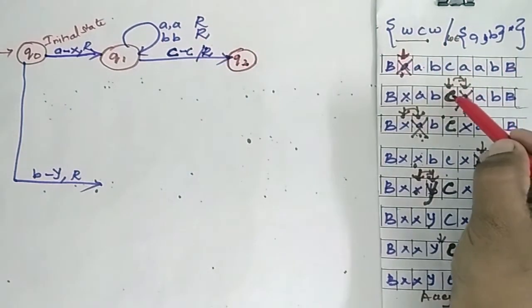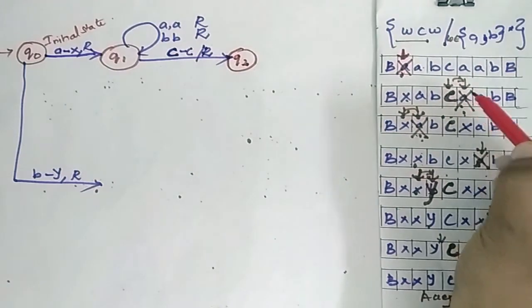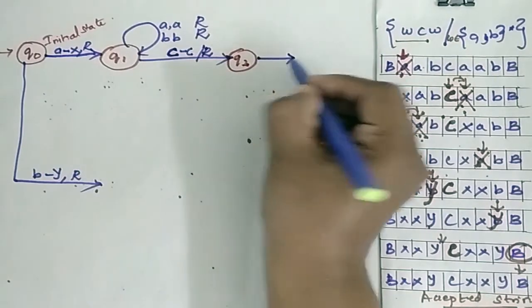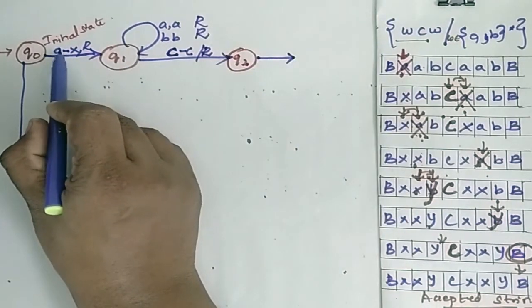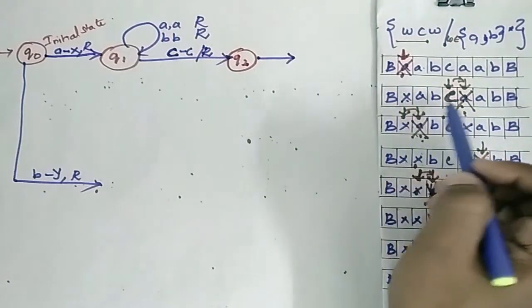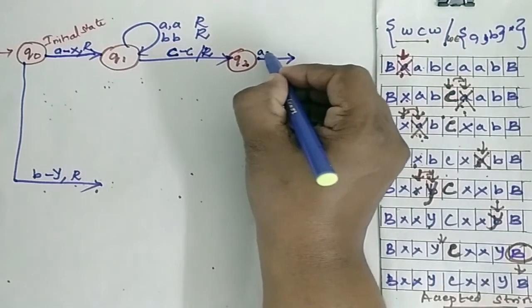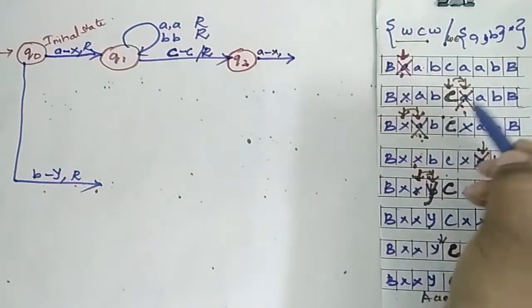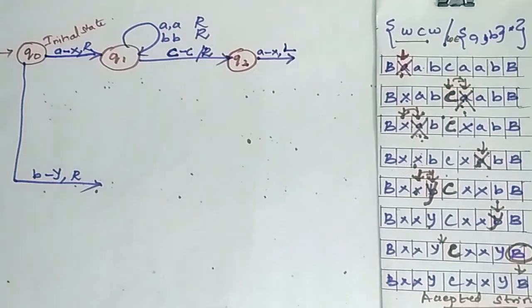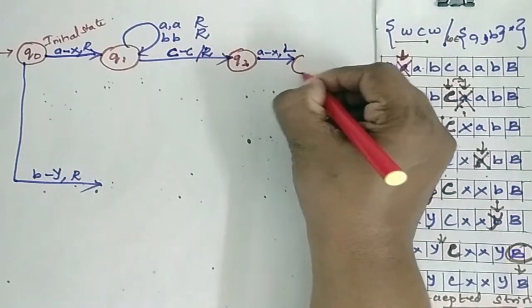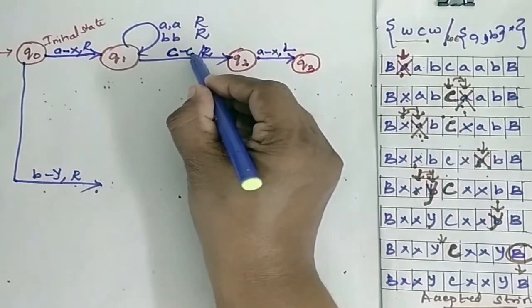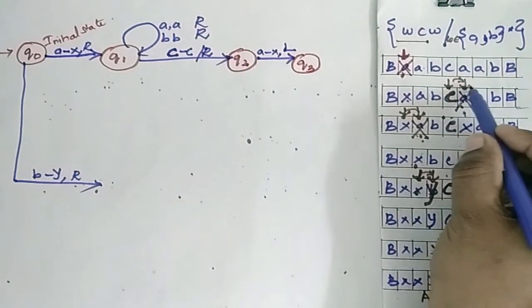In state Q2, the head checks for the A that was replaced before. If found, that A is replaced by X and the head moves left, transitioning to Q3. In Q3, when the head encounters C, it starts moving right again.